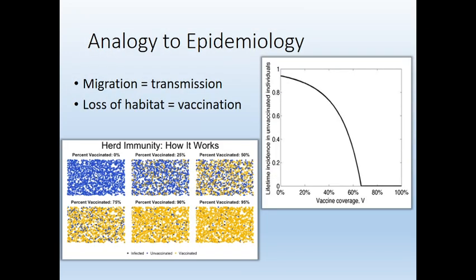There's an analogy we can make to epidemiology that might help you think about this scenario in the context of a disease with a vaccine. In this case, the disease is the endangered species we're talking about — or whatever species we're discussing. Migration is the transmission of the disease. And the loss of habitat is the vaccine. So when we vaccinate a person, we make that habitat patch — that person — unavailable to the disease, unavailable to the species.